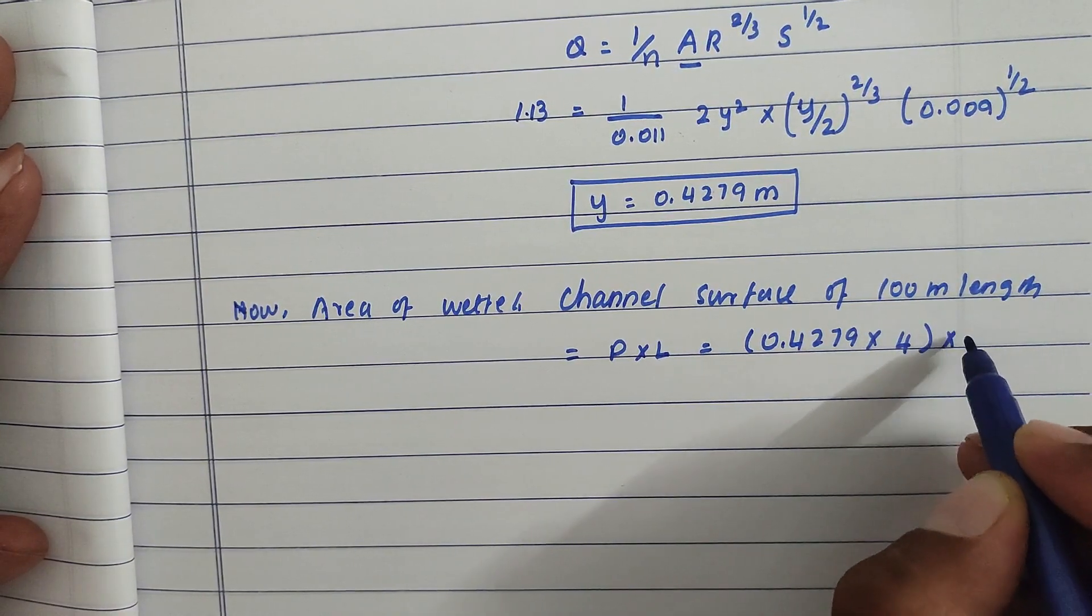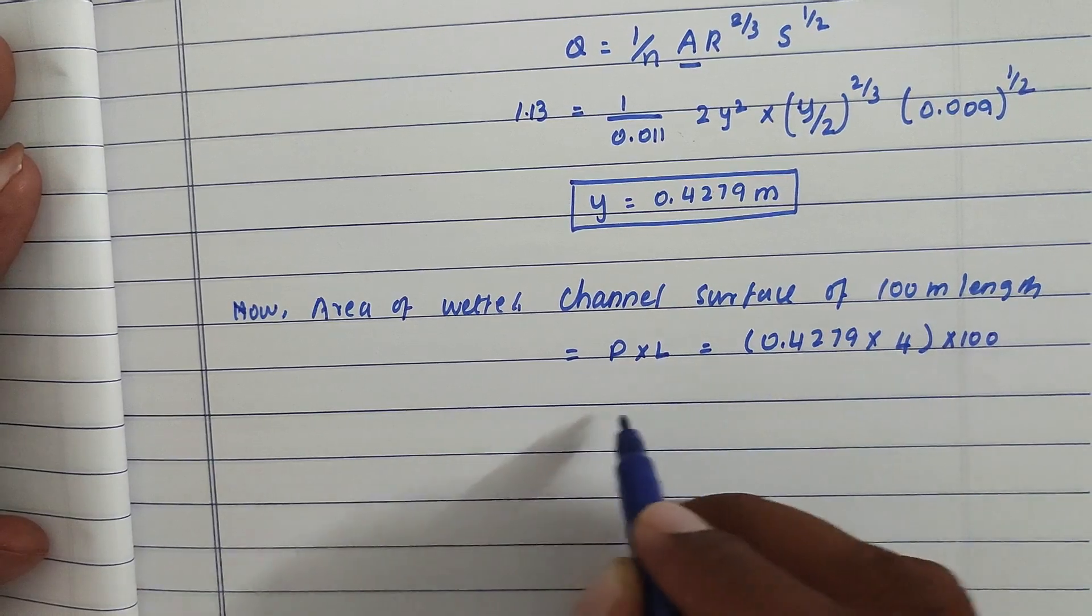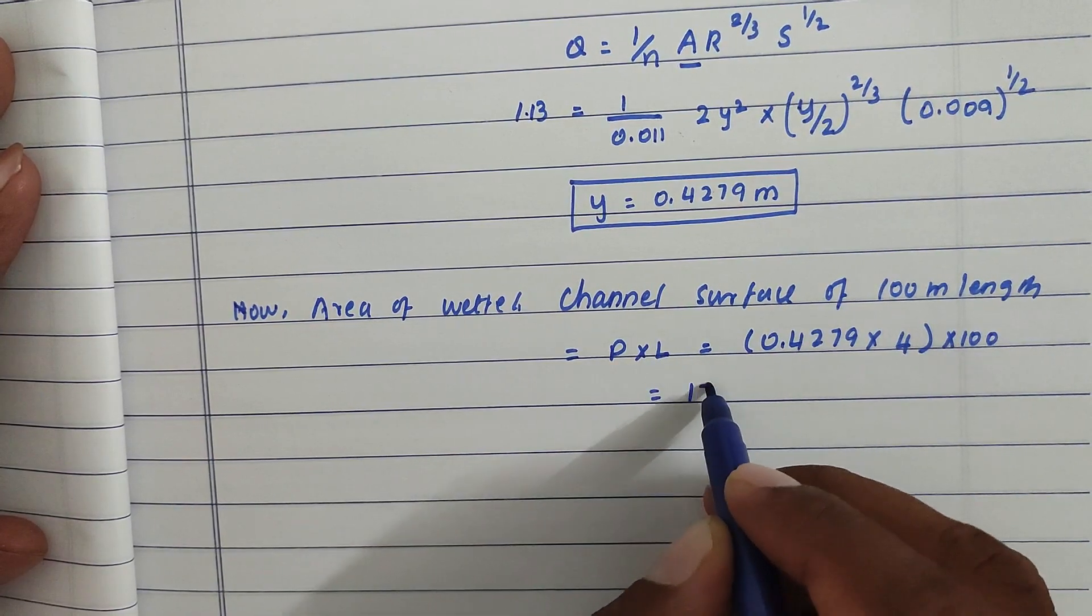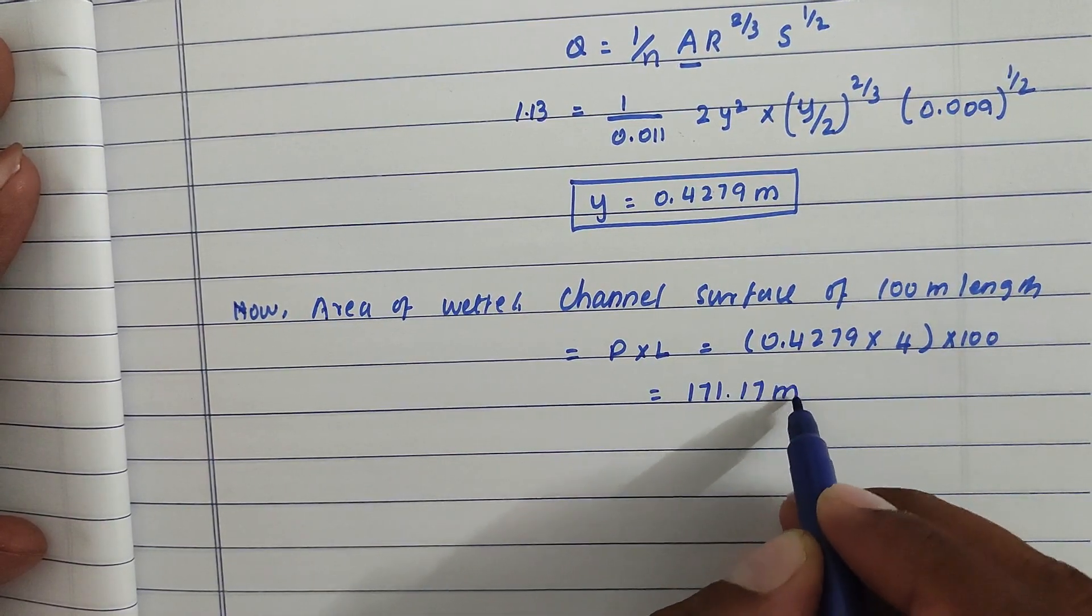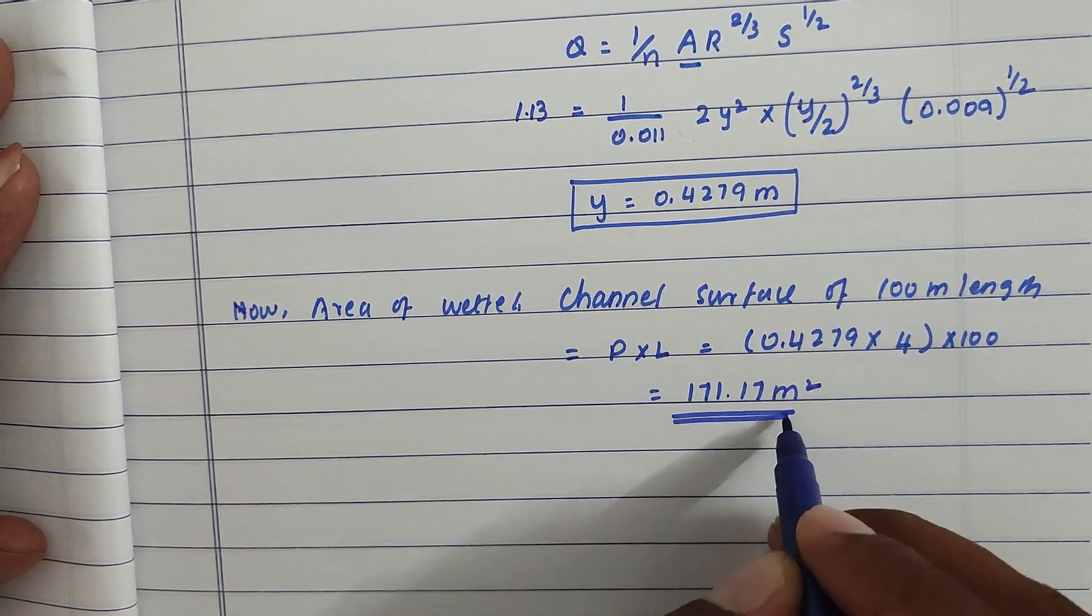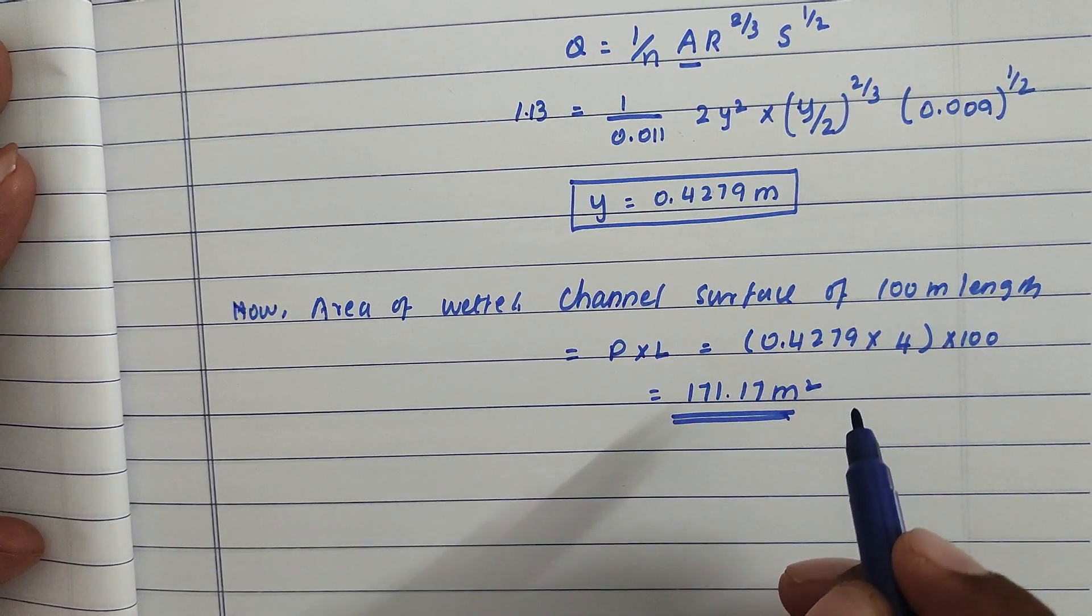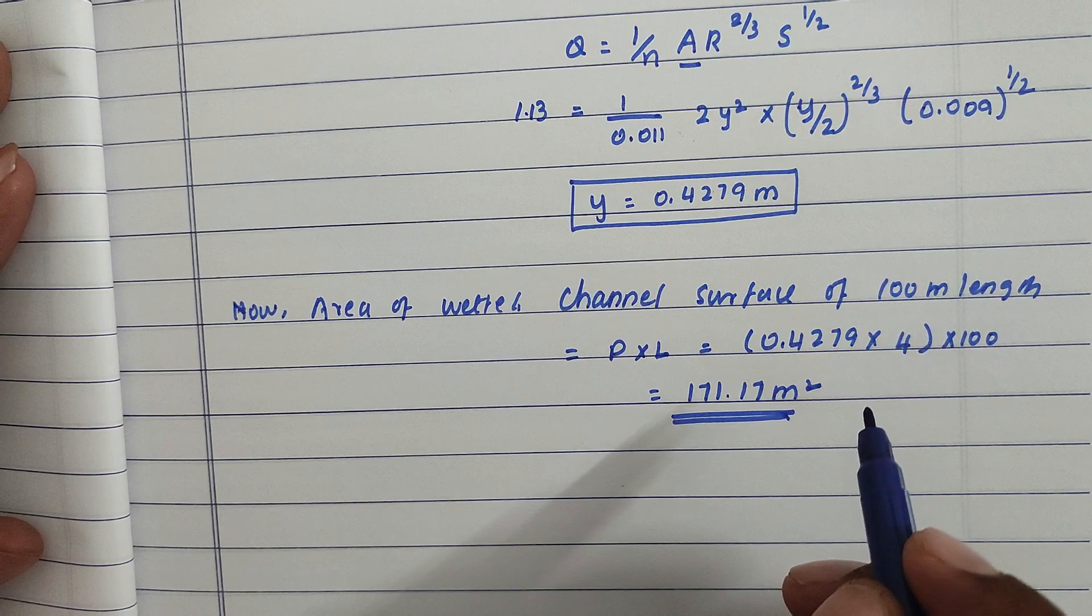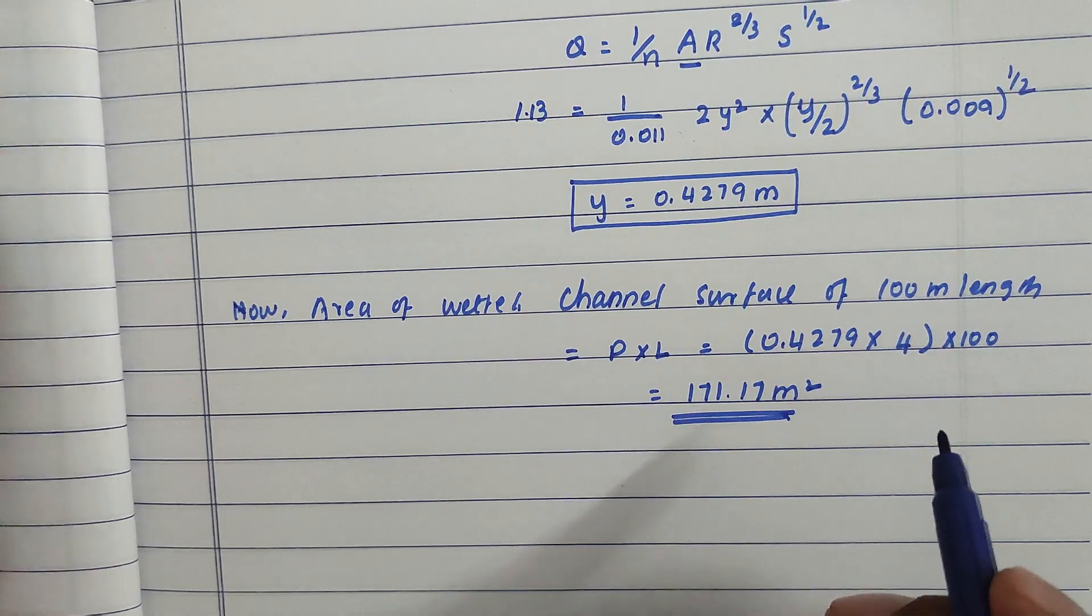Into 100, we get the value of 171.17 square meters. This is the minimum square meters of metal plate needed for 100 meter channel.